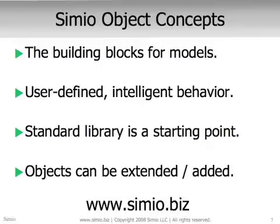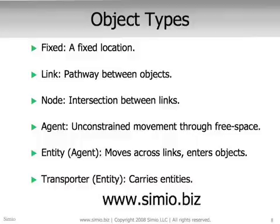Objects can be extended and easily added. There are six basic object types in Simio. The first is a fixed object — it has a fixed location in the system, for example a machine that stays in one location. A link models a pathway between objects, such as AGV pathways, conveyors, and road systems. Nodes provide intersections between links and model the logic that takes place as entities move from one link to the next.